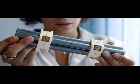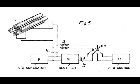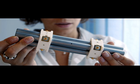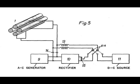The quadrupole mass analyzer is one type of mass analyzer used in mass spectrometry. As the name implies, it consists of four circular rods set parallel to each other. In a quadrupole mass spectrometer, the quadrupole is the component responsible for filtering sample ions based on their mass-to-charge ratio. Ions are separated based on the stability of their trajectories in the oscillating electric fields applied to the rods.